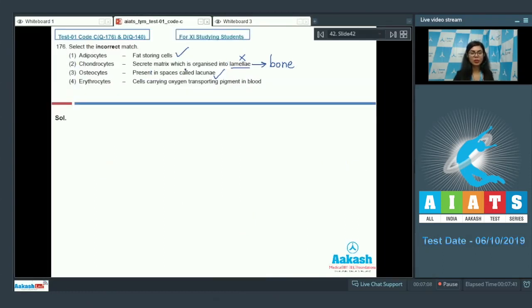Thus option 2 is incorrect. Option 4: erythrocytes - cells carrying oxygen transporting pigment in blood, that is hemoglobin, that is absolutely correct. The answer here would be chondrocytes, that is option 2.